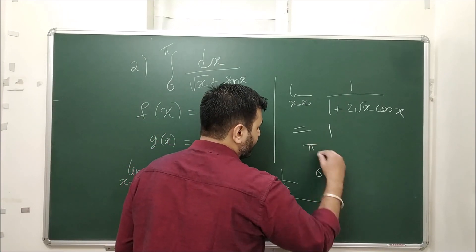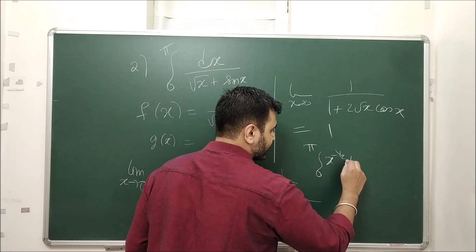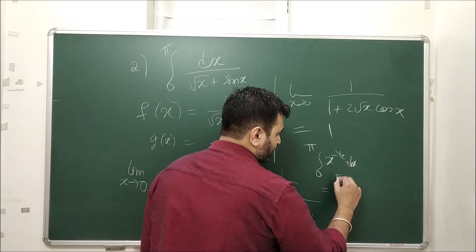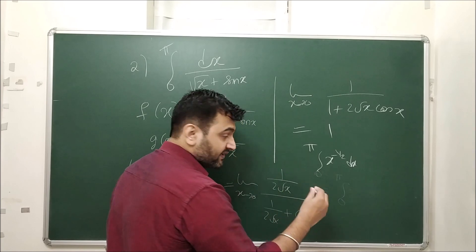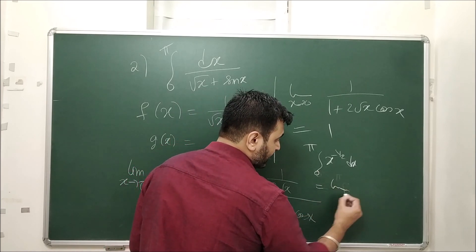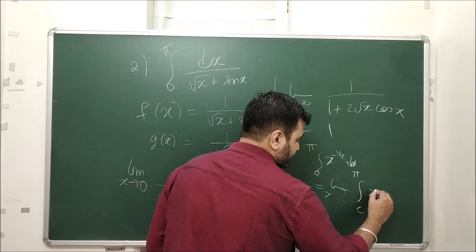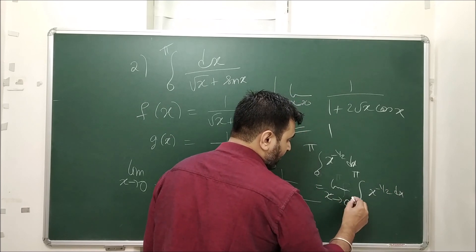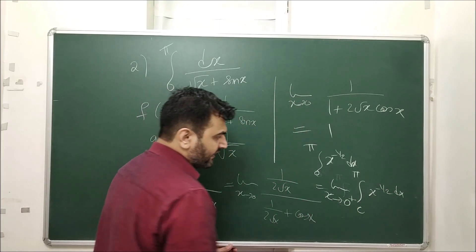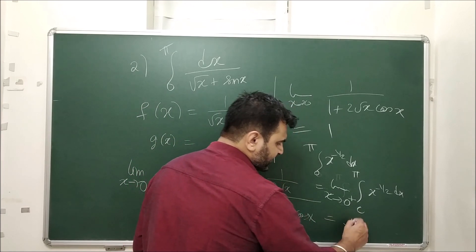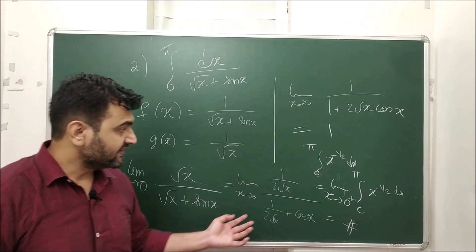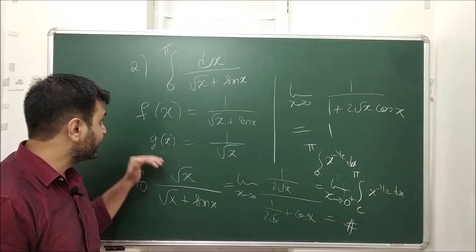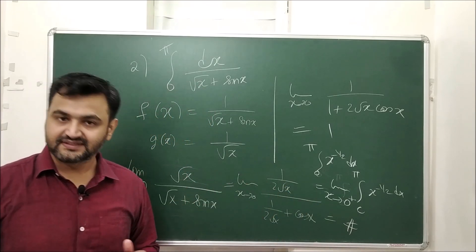Now what about integral of G? That is ∫₀^π x^(−1/2) dx. Applying the definition: limit as c → 0⁺ of ∫_c^π x^(−1/2) dx = 2√x evaluated from c to π, which comes out to be finite. So since integral G converges, therefore by limit comparison test integral f also converges.